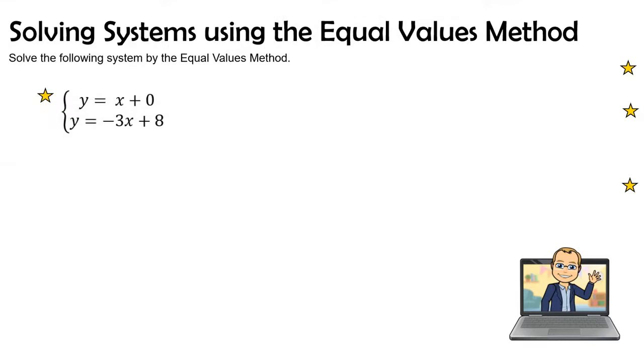Welcome back to part two of solving systems using the equal values method. The idea behind the equal values method is when I have two equations that are already in y equals mx plus b, I can set them equal to each other.